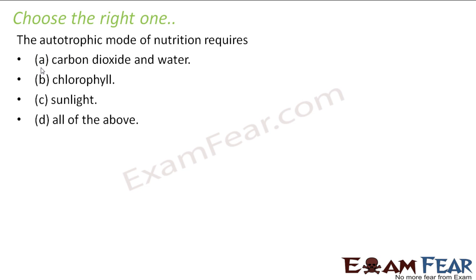The next question: autotrophic mode of nutrition requires carbon dioxide and water, chlorophyll, sunlight, or all of the above? It needs carbon dioxide, water, chlorophyll and sunlight — so all of the above is the correct answer.